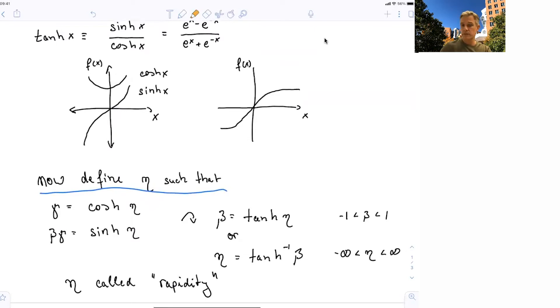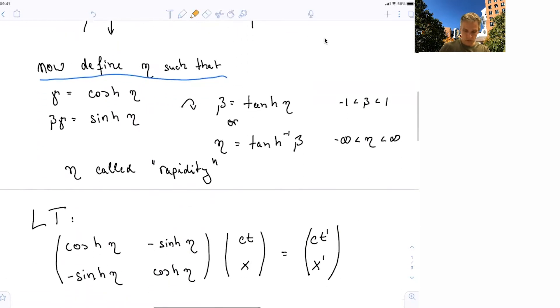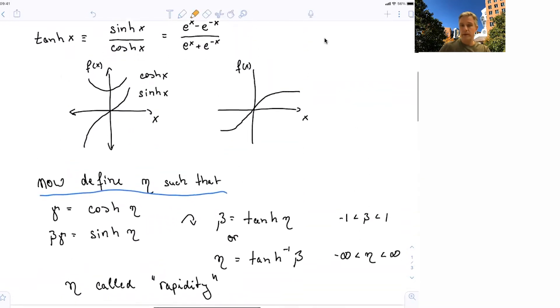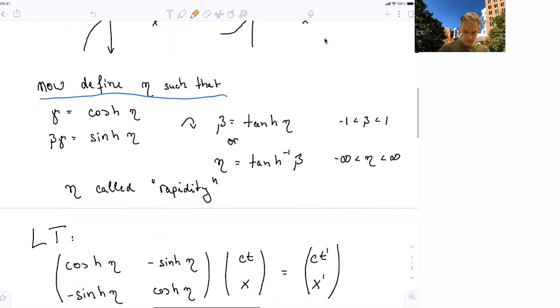And just remember that the slope in our space-time diagram is 1 over the velocity. We find that that angle again now has been called rapidity. And just as a reminder, beta goes from minus 1 to 1, depending on the direction. And then eta goes from minus infinity to infinity.